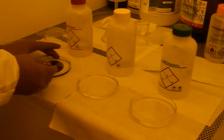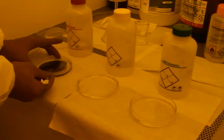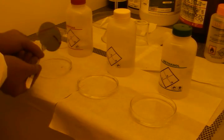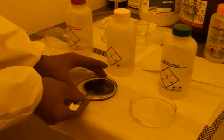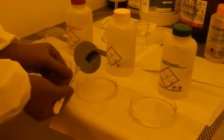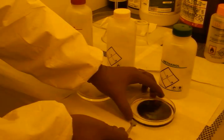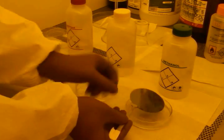Before we can build anything on top of the wafer, we first need to clean the surface to remove any unwanted organics and debris by rinsing with acetone, methanol, and isopropanol. After the wafer is rinsed with these chemicals, it is promptly rinsed with water and blown dry.